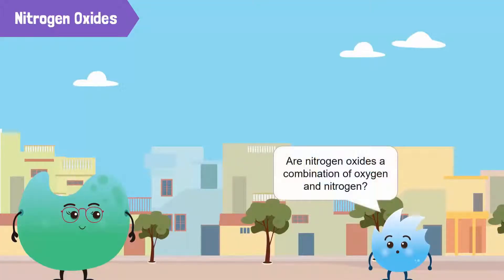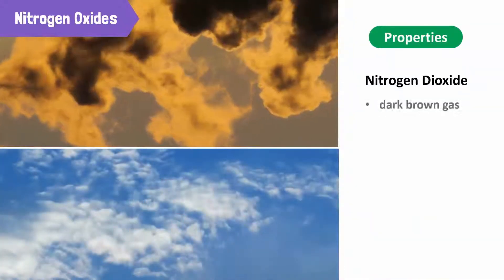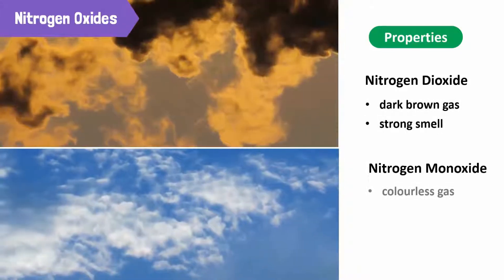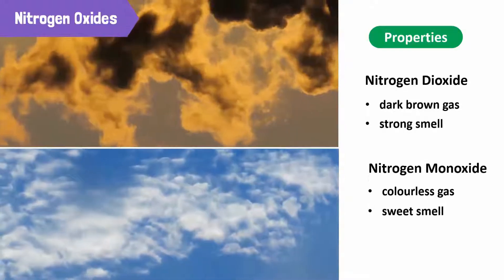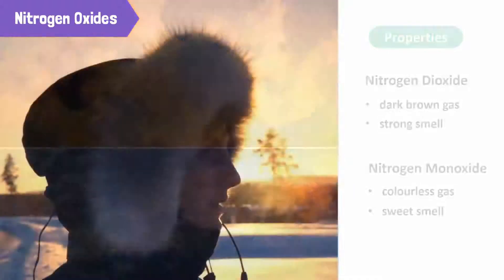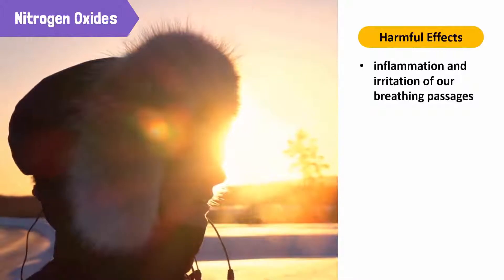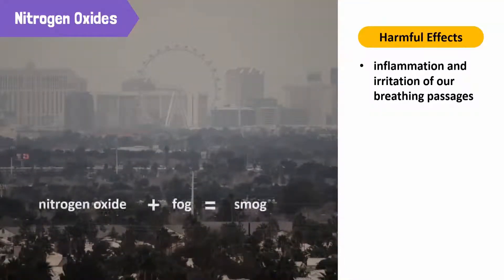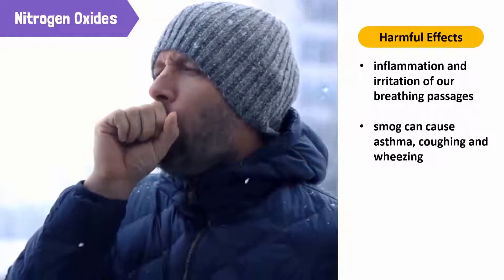Are nitrogen oxides a combination of oxygen and nitrogen? Yes. There are two nitrogen oxides that contribute to air pollution: nitrogen dioxide, which is a dark brown gas with a strong smell, and nitrogen monoxide, which is a colorless gas with a sweet smell. Nitrogen oxides cause inflammation and irritation of our breathing passages. They combine with fog in heavily polluted areas to form smog, and exposure to smog can cause asthma, coughing, and wheezing.